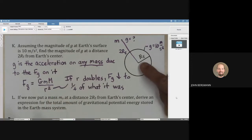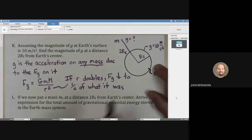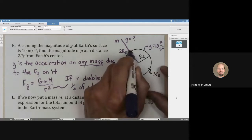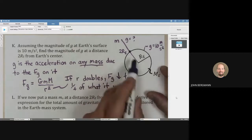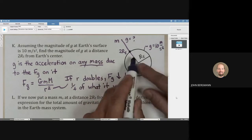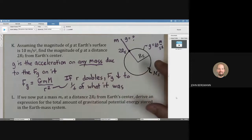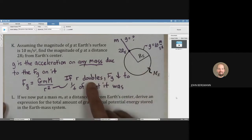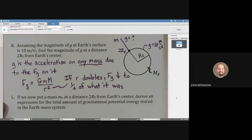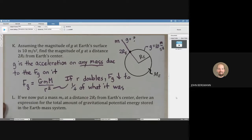The distance away - when this object m is at the surface, it's got a distance of RE away from the center of the Earth. And if it's up here, it's got a distance of 2RE. So the R has doubled, which means the force of gravity is going to go down by a factor of four. And if the force goes down by a factor of four, then the acceleration also goes down by a factor of four.